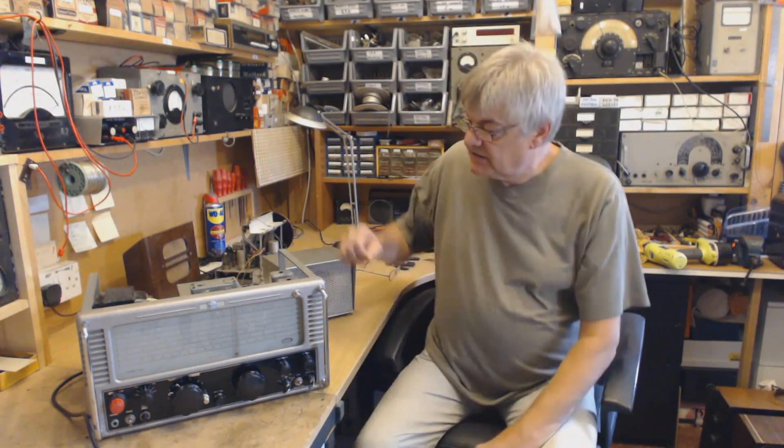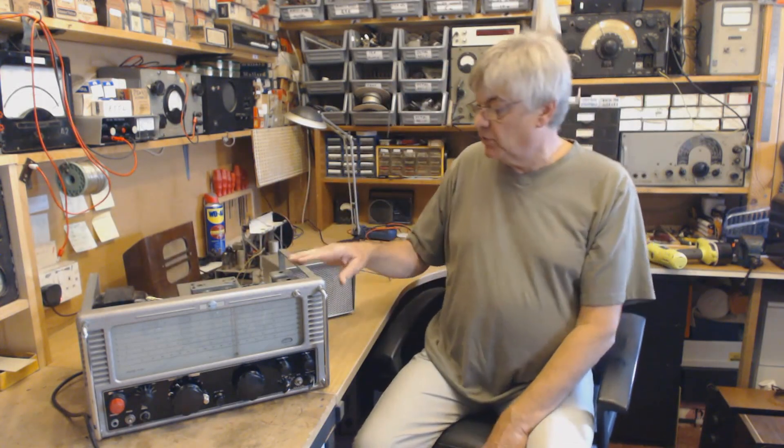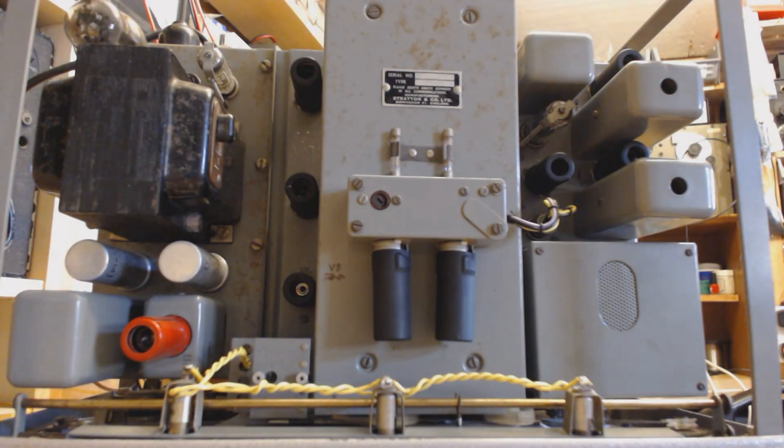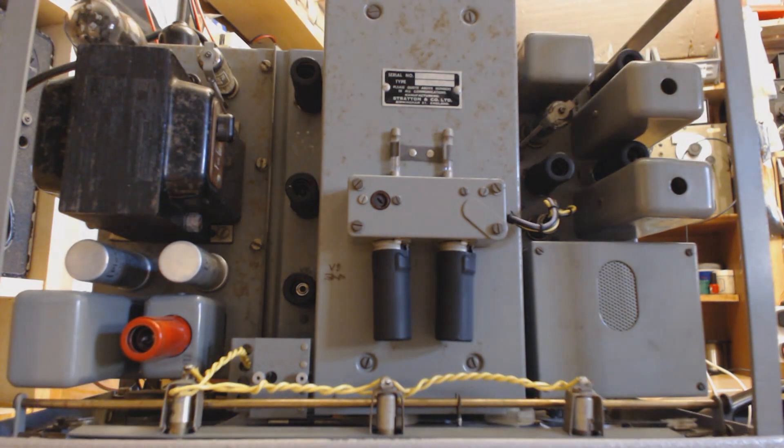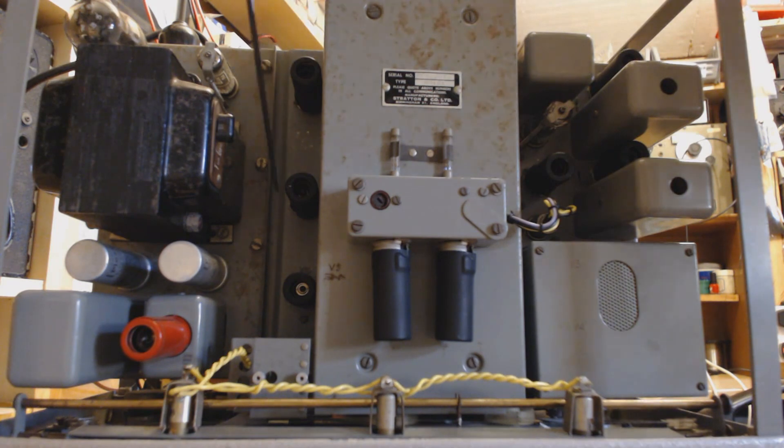Let's not hang about. Let's have a look, first of all, at the top of the chassis there. Okay, this is the top view of the chassis. Rectifier, there's a stabilizer valve there. Then we've got RF amp there, mixer, oscillator.